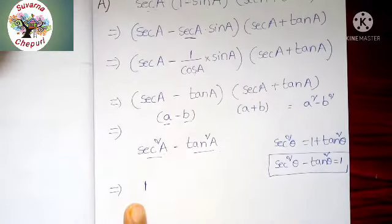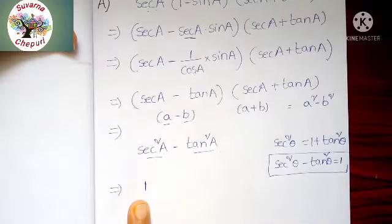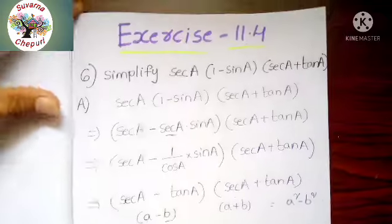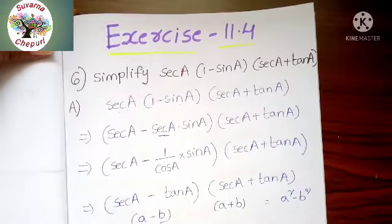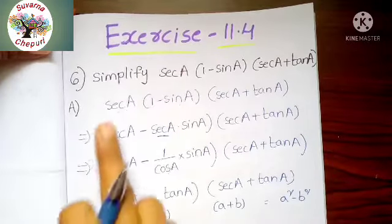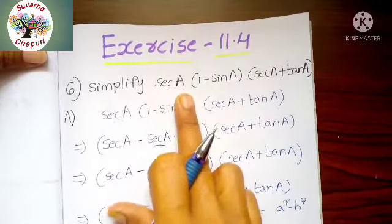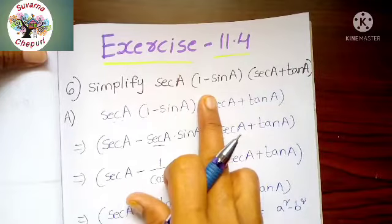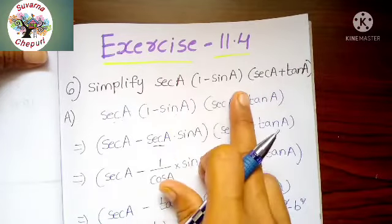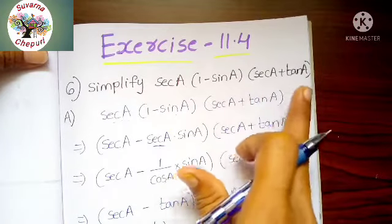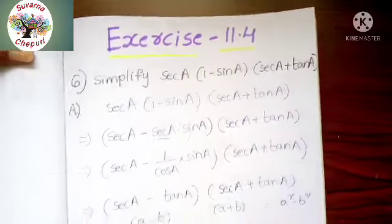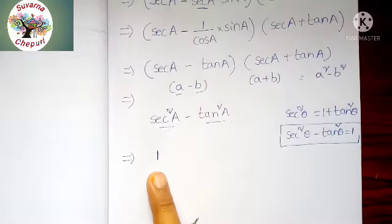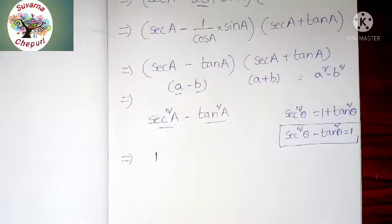Students, finally we got the answer 1. Did you understand? What they given: secant A into 1 minus sin A into secant A plus tan A. The answer is 1.